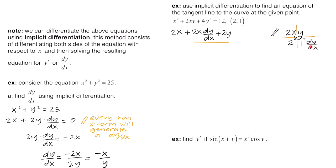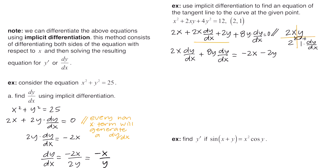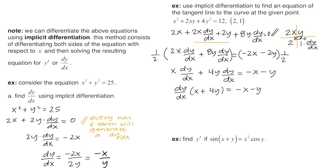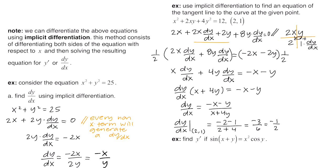The product rule gives us 2x times dy/dx plus 2y. The derivative of 4y squared is 8y times dy/dx. The derivative of 12 is 0. We put dy/dx terms on one side and non-dy/dx terms on the other. Noticing every term has a factor of 2, we divide the whole equation by 2. Then we factor out dy/dx and divide. To find the tangent line, we plug in x equals 2 and y equals 1, getting slope equals negative 1 half. Using point-slope form: y minus 1 equals negative 1 half times the quantity x minus 2.